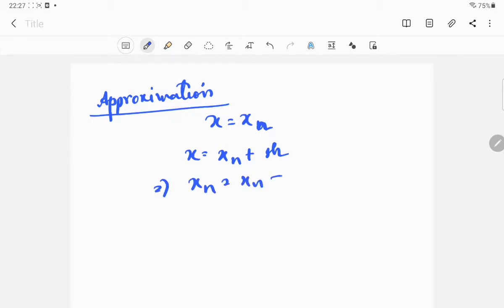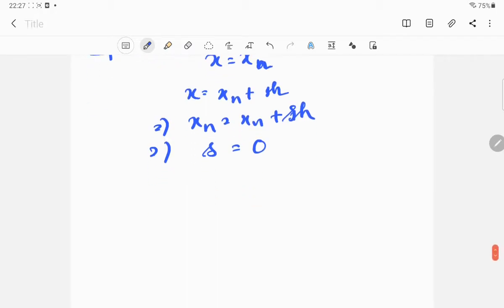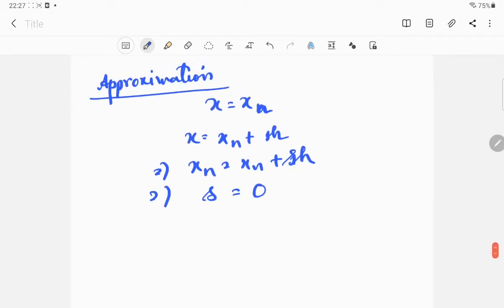You know that x equal to x_n plus sh, that we have already done. So if x equal to x_n, x_n plus sh, h cannot be equal to 0, so the solution is s equal to 0. So if x equal to x_n, s is equal to 0.